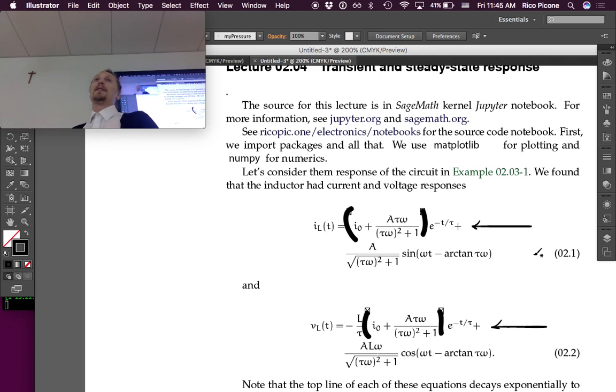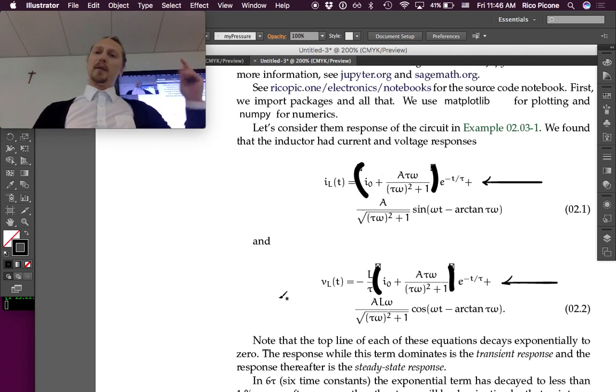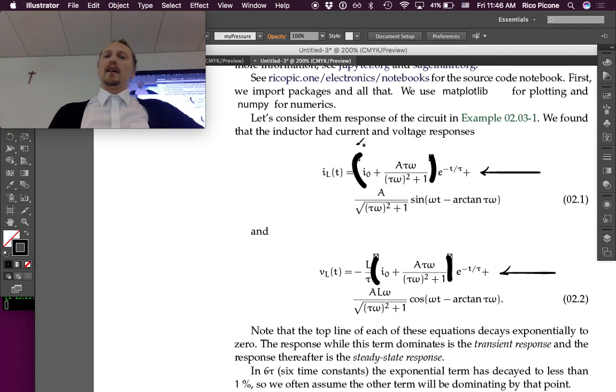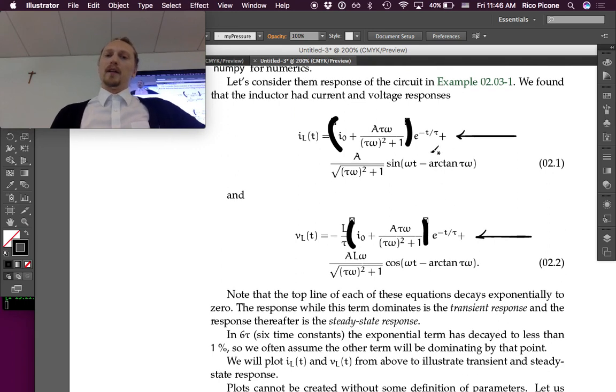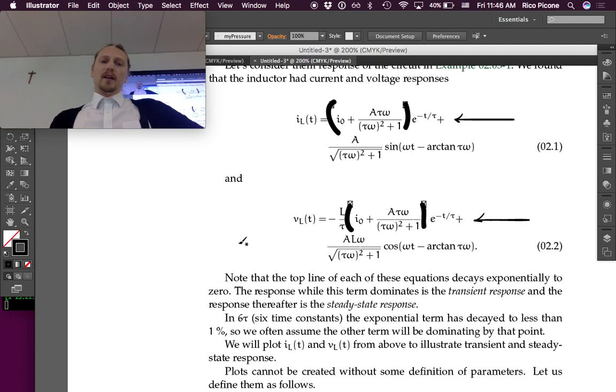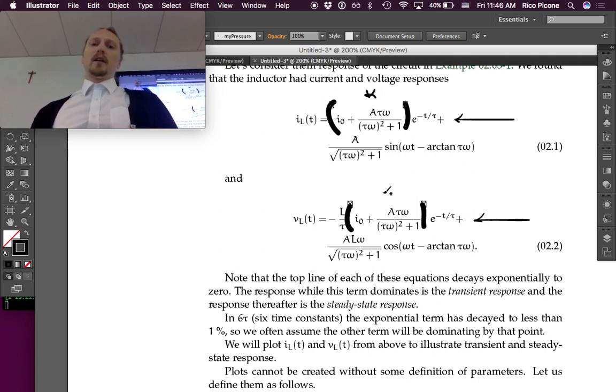Let's consider the circuit from this last example that we just did. We found that the inductor had current and voltage responses like this. I plugged in the numbers for C and for K1. Note that the top line of each of these equations decays exponentially to zero. This is the decaying exponential term - this is our kappa. These exponential terms go to zero as time increases.